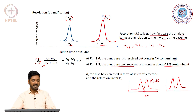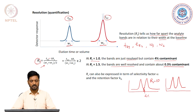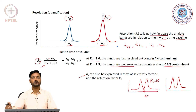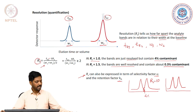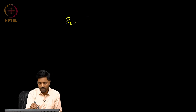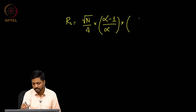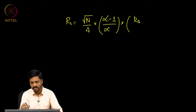So depending upon the extent of purified material that we need, we should choose our elution conditions so that well-resolved peaks can be generated for the analytes we want to separate. The resolution value can also be expressed in terms of the selectivity factor and the retention factor. That equation is: R equals square root of N divided by 4, multiplied by (alpha minus 1) divided by alpha, and this multiplied by the retention factor.